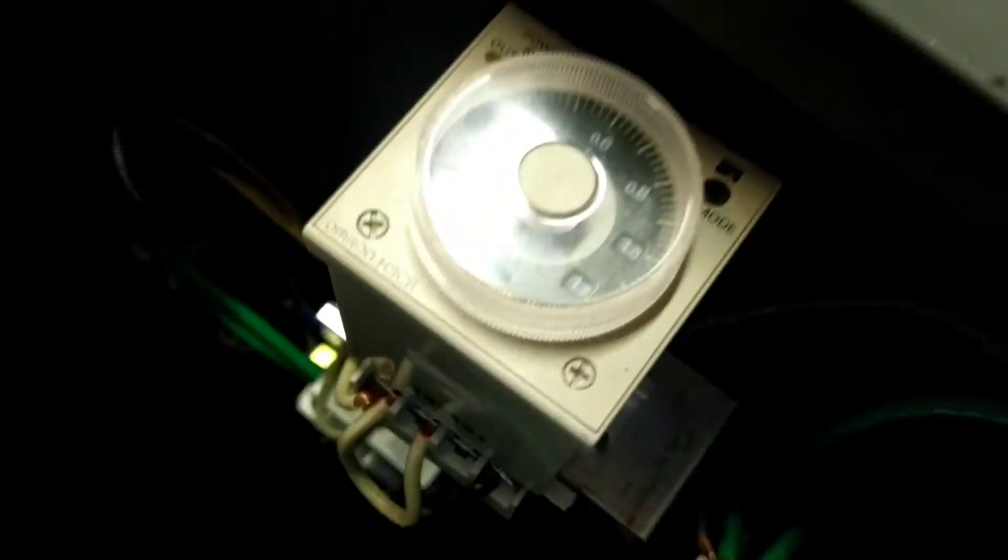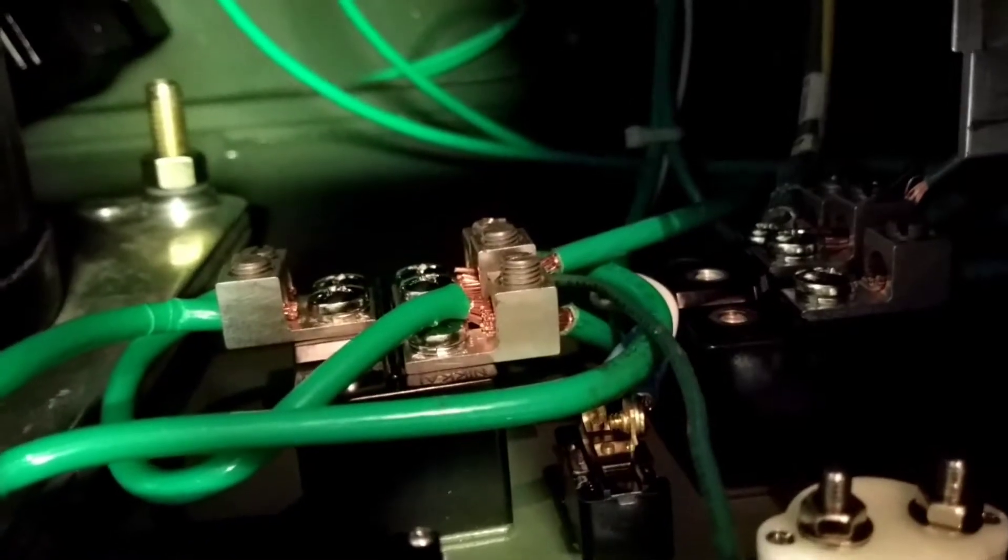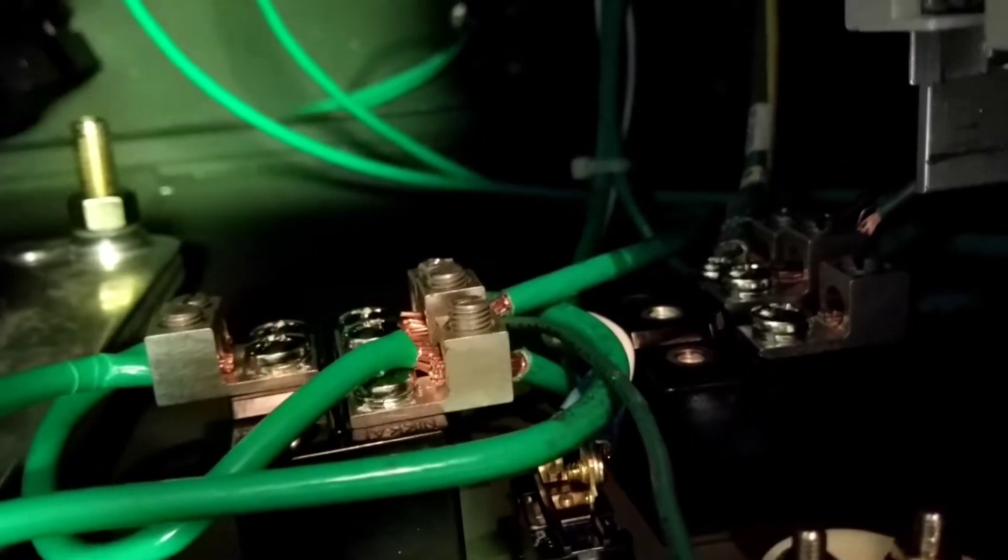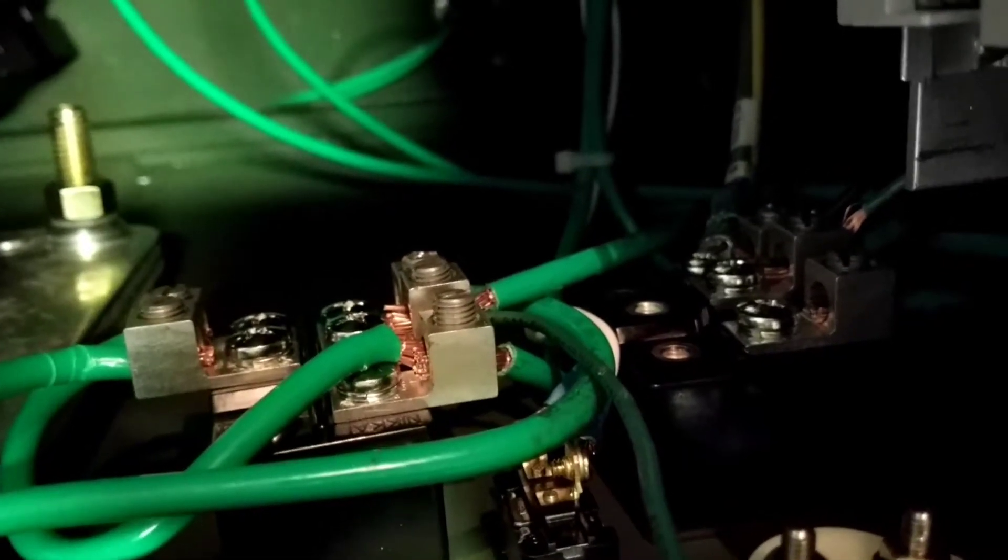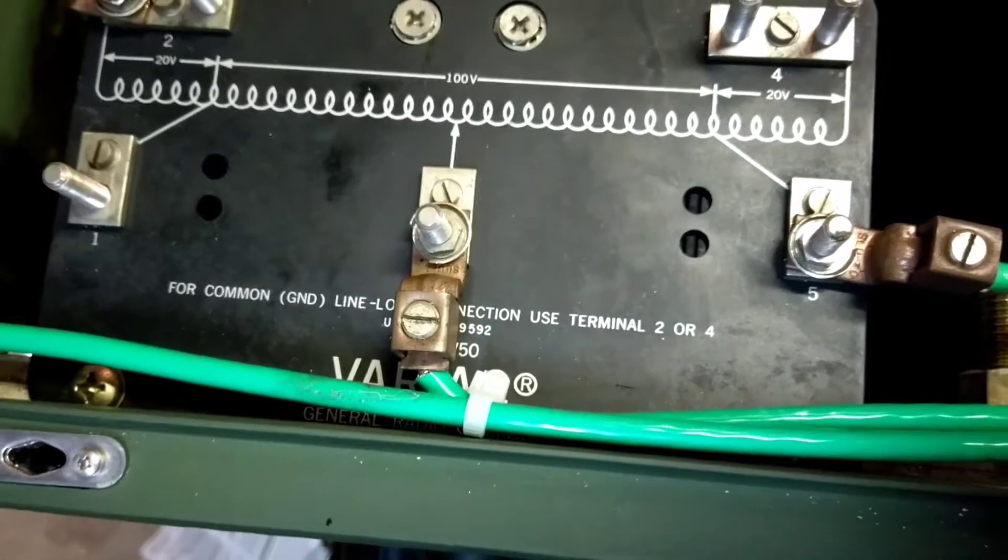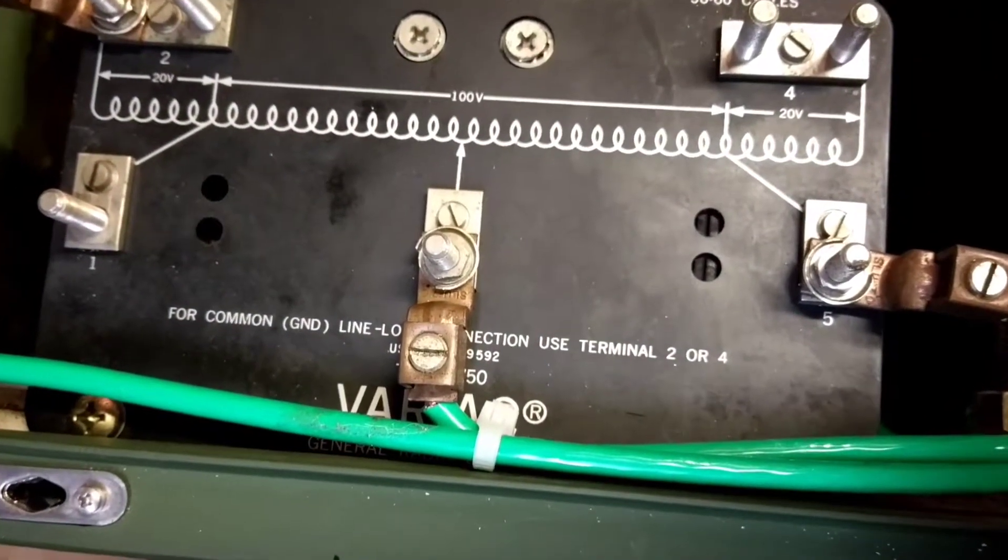Then a timer module, and then a pair of very substantial double pole switches rated at 50 amps each. And then the actual variac. The variac is only a 120 volt 50 amp unit, but I've got a way around that and it's through the use of these switches how it's arranged.